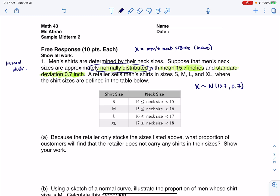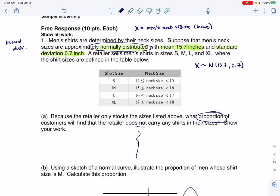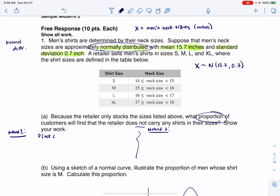Let's see what part A says. It says because the retailer only stocks the sizes listed above, what proportion of customers will find that the retailer does not carry any shirts in their sizes? So again, I see proportion, this is one of the P words, so I'm going to get a probability. There's a couple of ways to do this. I'm going to break this down into two ways. I'll call one method one and I'll talk about the other one, method two. You have to figure out which one makes more sense in your brain, whichever one seems to gel better, go with that. When I hear something like I want the probability that this retailer does not carry these sizes, I think of the complement rule, and that would be one minus the probability that the retailer carries the sizes. And we know the sizes they carry, they go from 14 to 18. So what I could do here is say this will be one minus normal CDF, and I would go 14, 18, 15.7, and then 0.7.